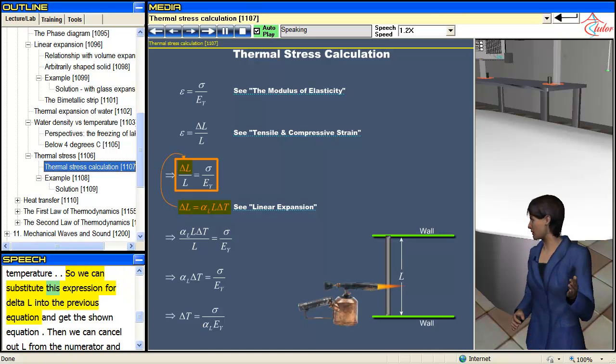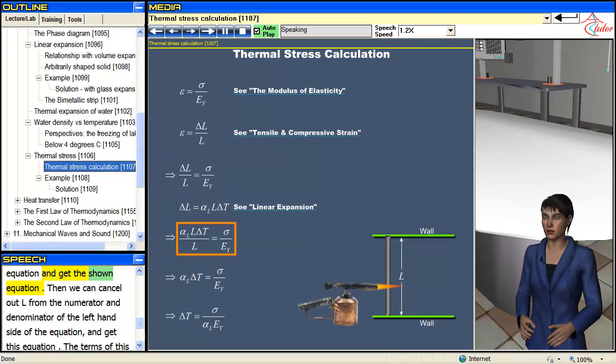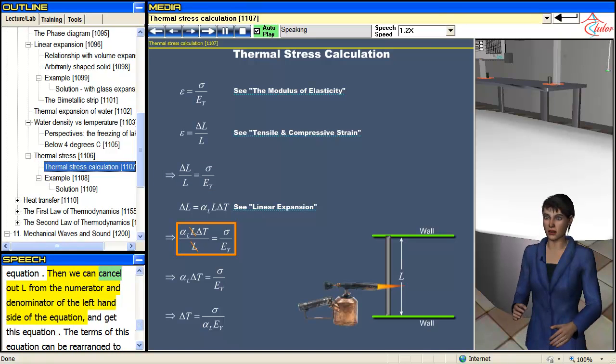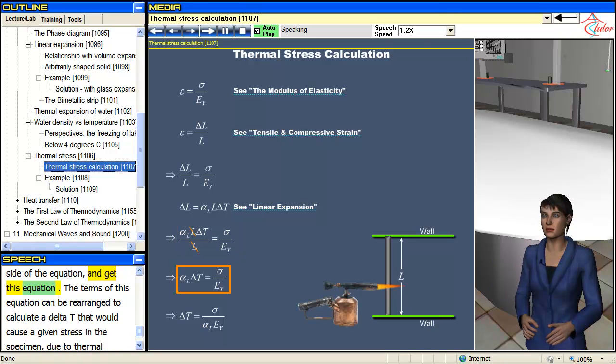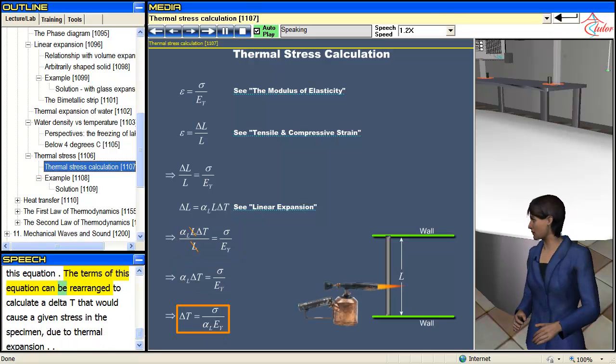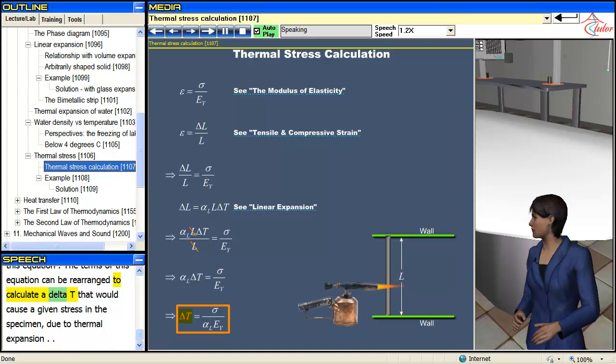So we can substitute this expression for ΔL into the previous equation, and get the shown equation. Then we can cancel out L from the numerator and denominator of the left hand side of the equation, and get this equation. The terms of this equation can be rearranged to calculate a ΔT that would cause a given stress in the specimen due to thermal expansion.